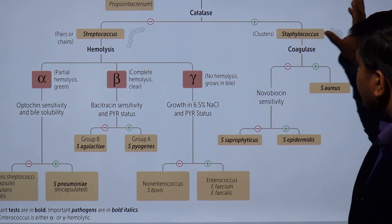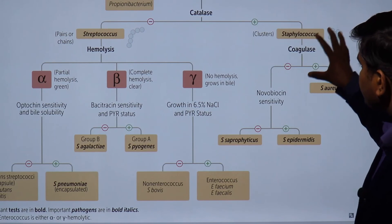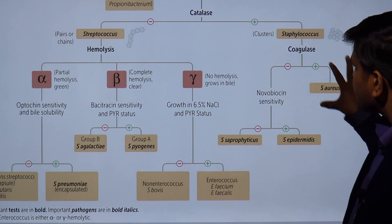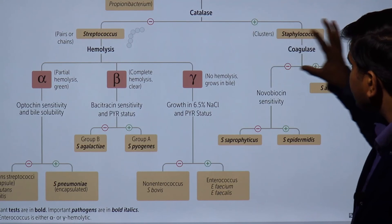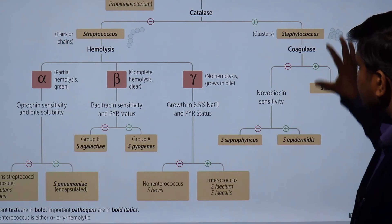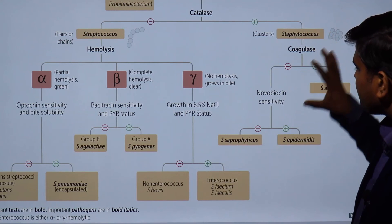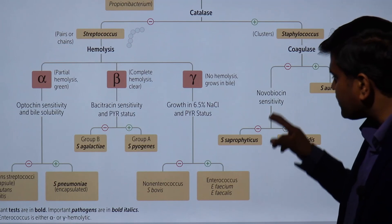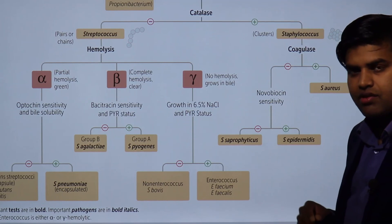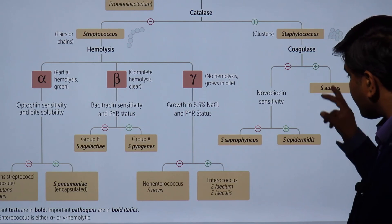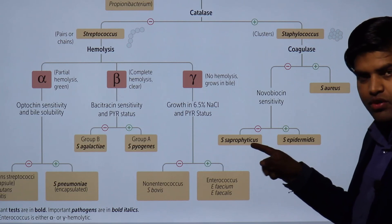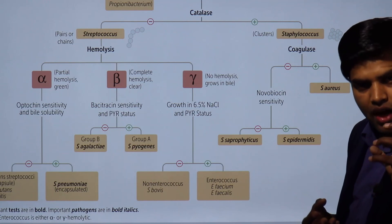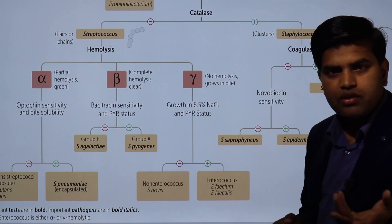If gram positive and catalase positive, that is the Staphylococcus group. Coagulase positive leads to S. aureus. Coagulase negative leads to the novobiocin test — sensitive gives S. epidermidis, resistant gives S. saprophyticus. In an exam scenario, they will give you a clinical scenario with these four pieces of information and ask you to identify the organism, and using this algorithm you can do that.